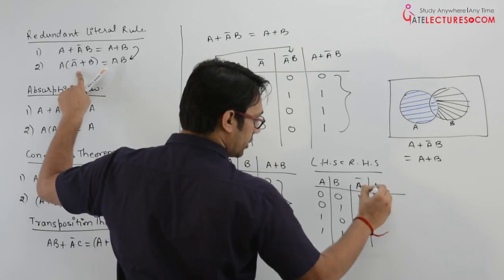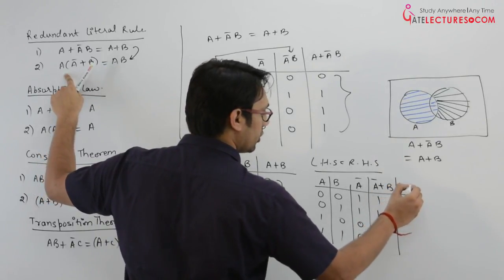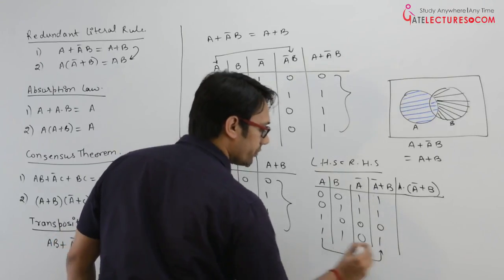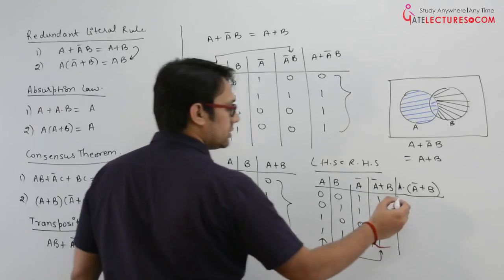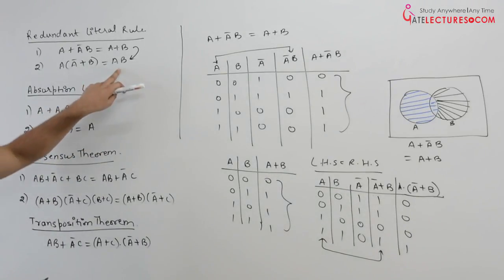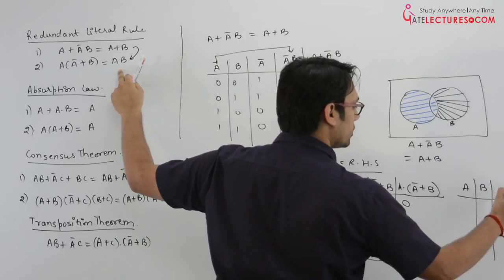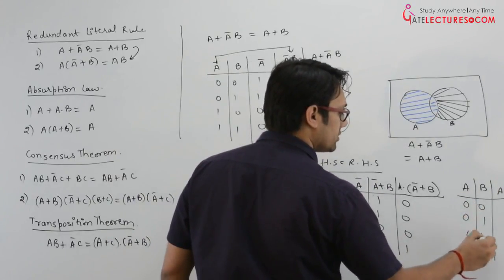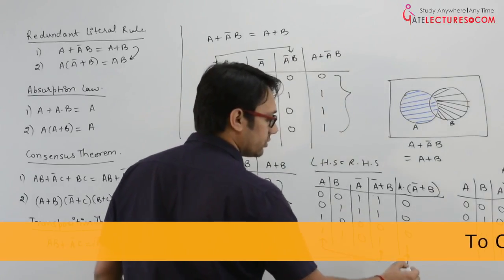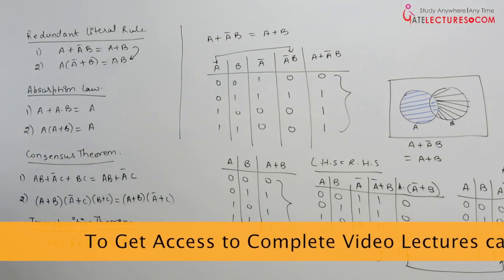Then A dot A complement plus B — we make AND between A and A complement plus B — gives 0, 0, 0, 1. Now for AB directly: AB is an AND operation giving 0, 0, 0, 1. As you can see, both values are equal. So we have just proved the redundant literal rule for both forms.